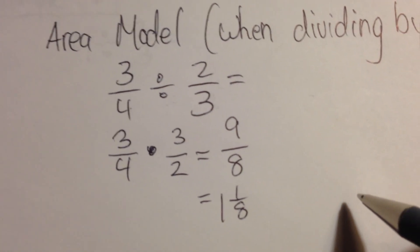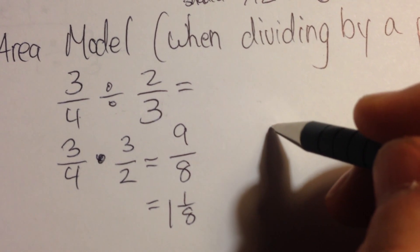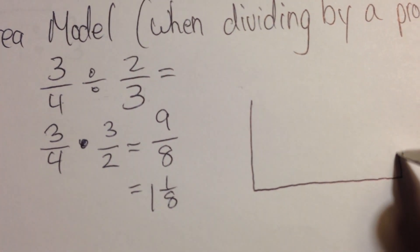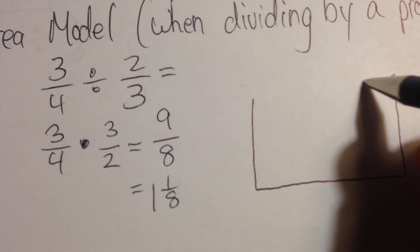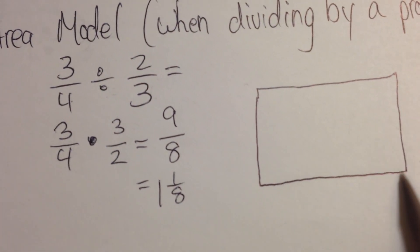When I go to draw this, it's similar to the other area model example I did. The best shape to use is a rectangle. Because remember, area covers, and if we're talking about the area of a rectangle, I'm doing base times height.